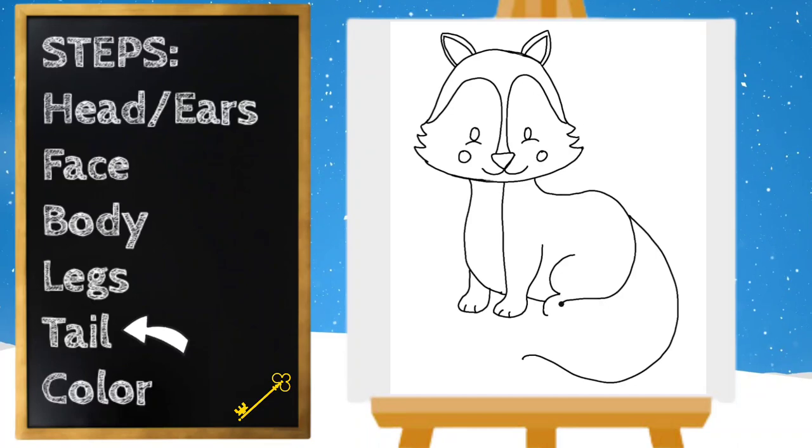And this line that we made for the body we're gonna try to connect it to the tail. All right, you clean up some of these lines right here. Okay, and then I gave my fox like a little squiggly line for the tip of his tail and let's draw some toes for his back foot.